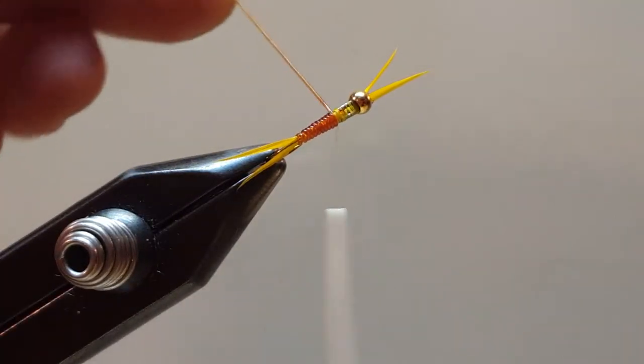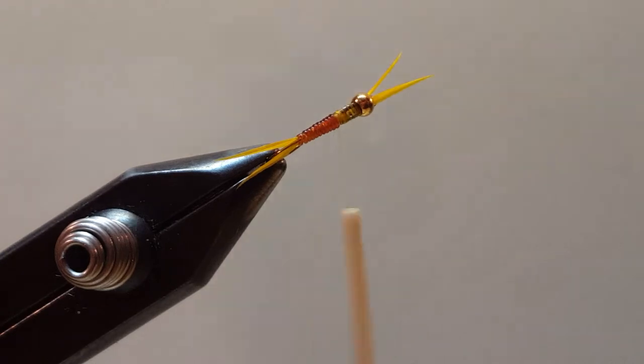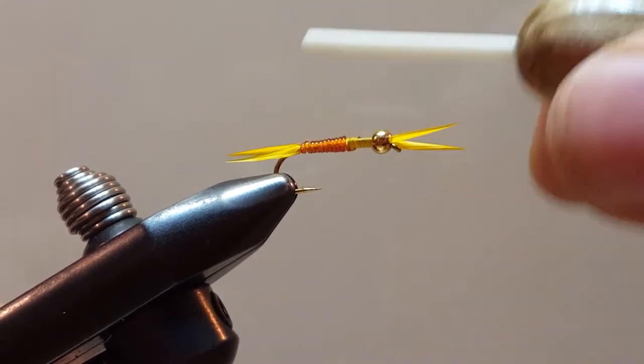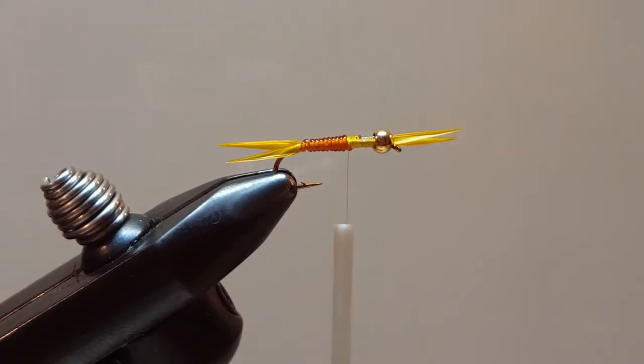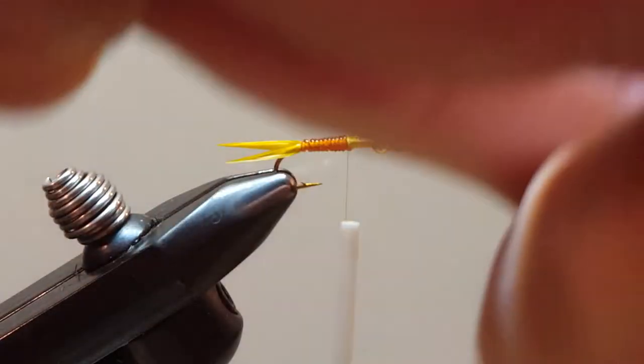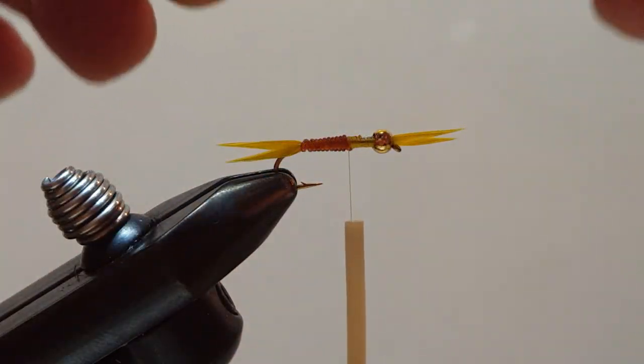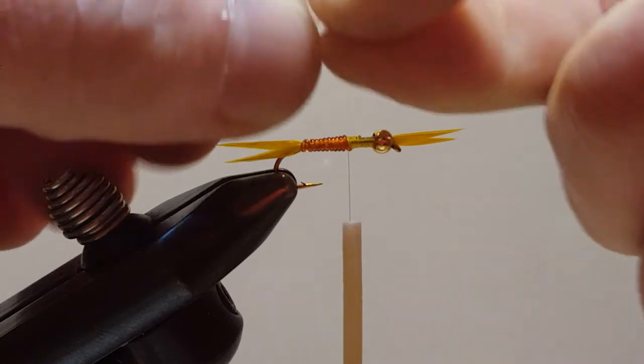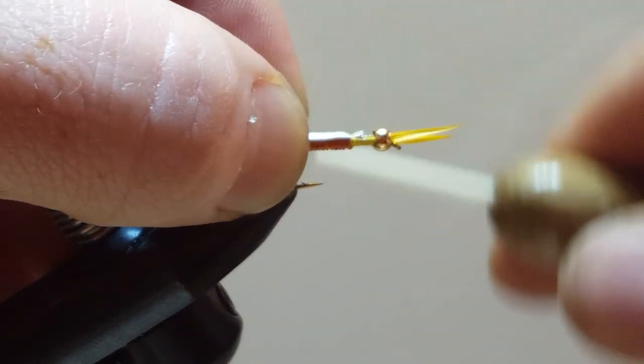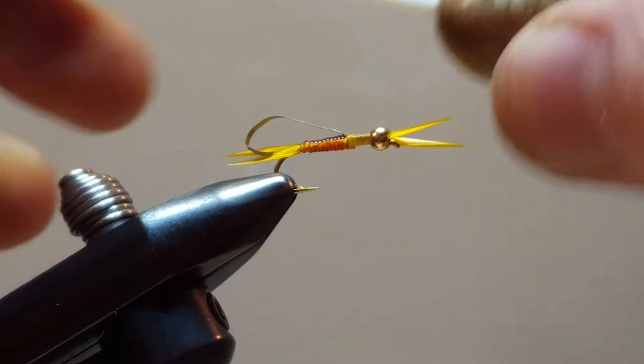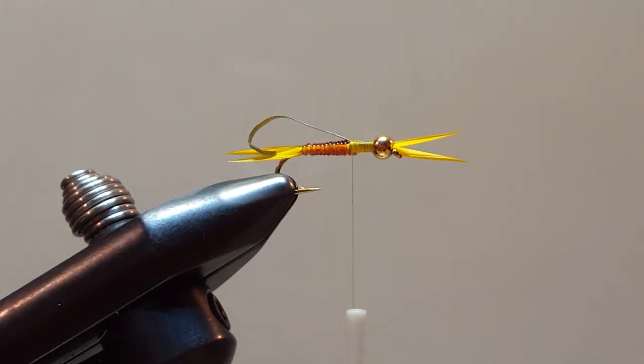All right, let's go ahead and trim this off. All right, now we're going to tie in our wing casing. And we've got to start with the gold. And there's a silver and a gold side. I'm going to tie this in silver side up. So when I fold it back and over, the gold is exposed. And having those two wraps of lead wire on either side of the shank of the hook really leaves a nice, even flat surface for this to go onto.